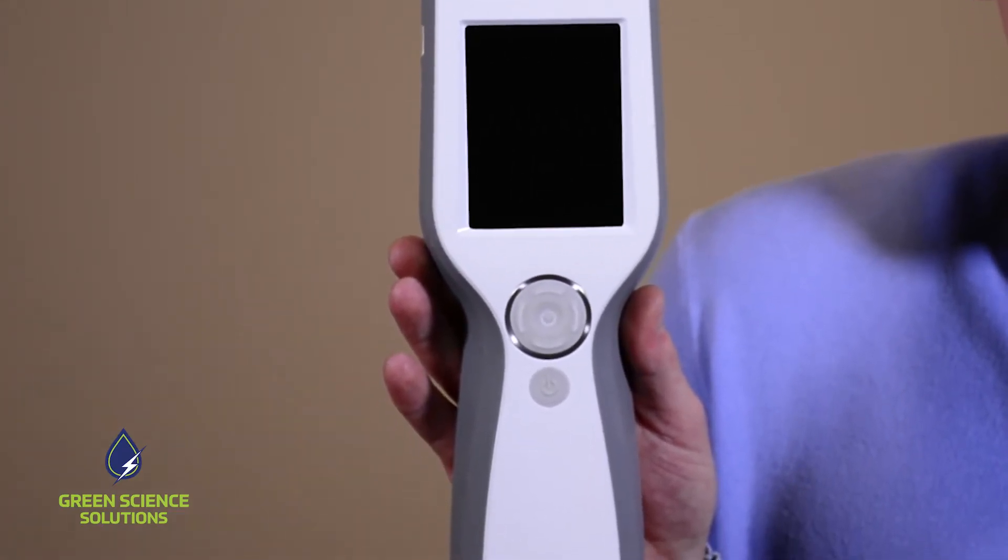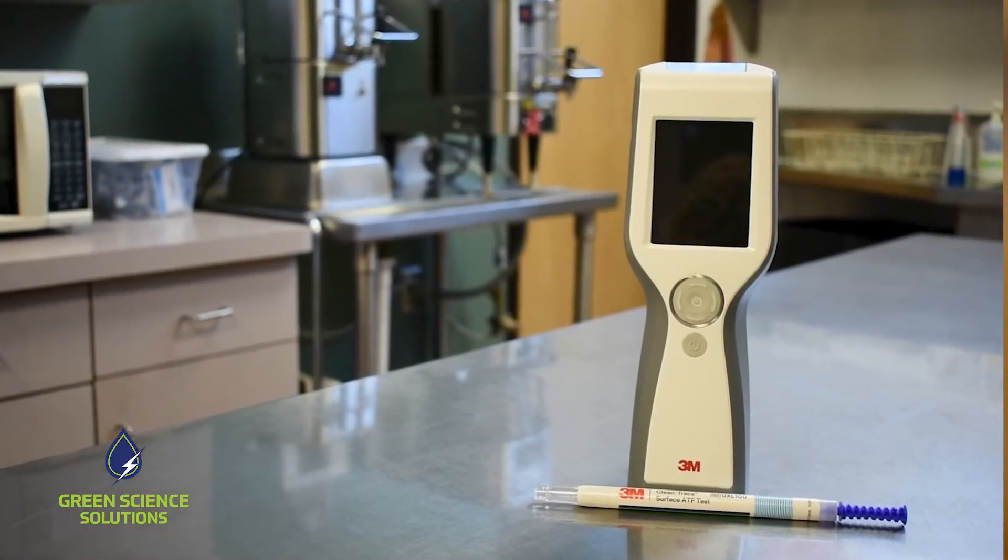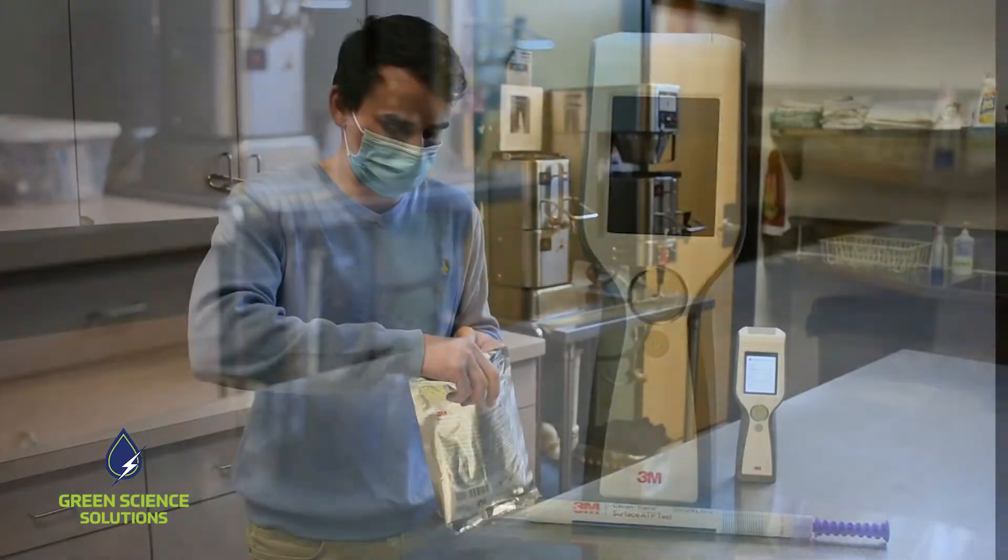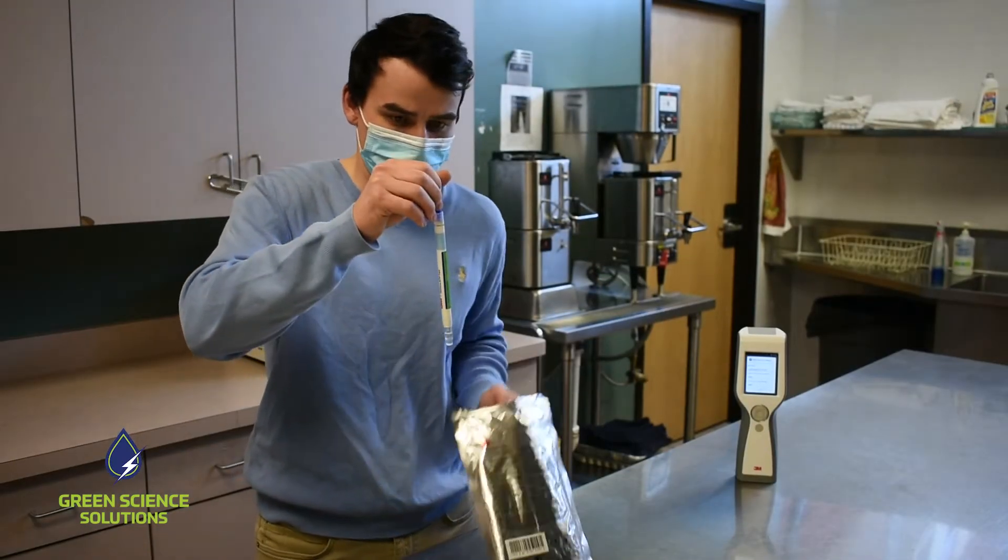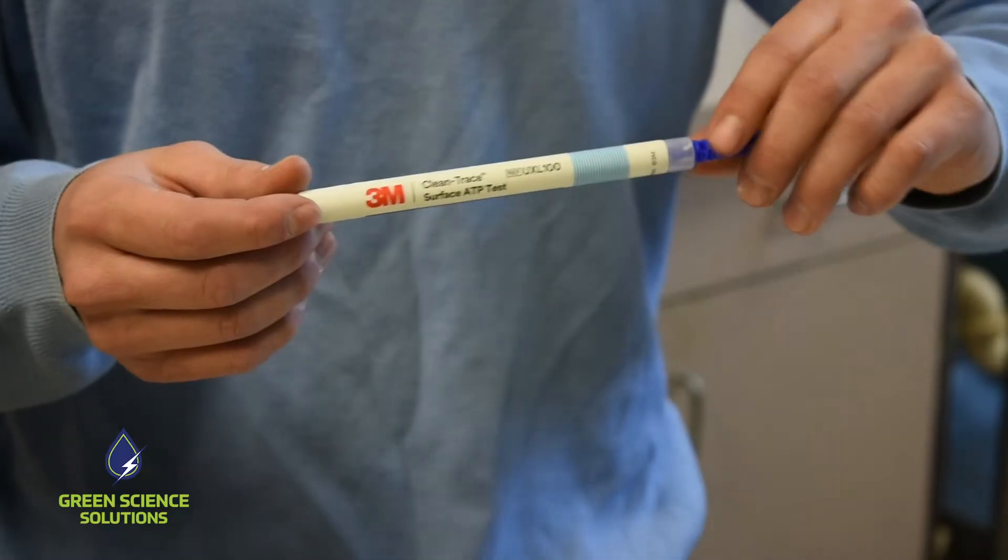Well, we have the perfect answer right here with 3M's ATP meter, also known as the LM1. ATP testing allows you to compare the cleanliness of an area before and after it's been cleaned, and 3M's LM1 is recognized as the most accurate technology in the field. Here's how it works.